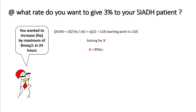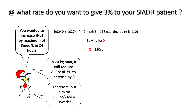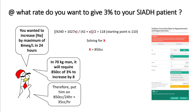Now let's go to our SIADH patient. At what rate do you give 3% saline? Remember, we want to increase sodium by a maximum of 8 mEq/L in 24 hours. Solving the same equation, you get around 850 cc's, and dividing 850 cc's over 24 hours gives 35 cc's per hour for this 70 kg person. You can also use an online calculator.